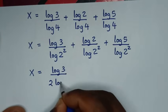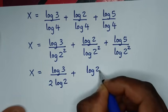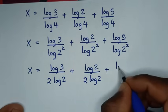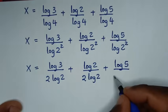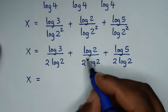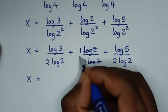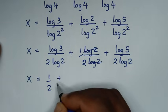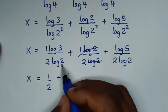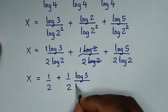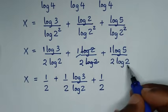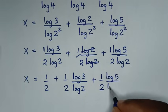So it will be x is equal to log of 3 over 2 log of 2, plus log of 2 over 2 log of 2, plus log of 5 over 2 log of 2. From here, log of 2 divided by log of 2 will cancel, so it will be 1 over 2. So here it is 1 over 2 times log of 3 over log of 2, plus 1 over 2 times log of 5 over log of 2.